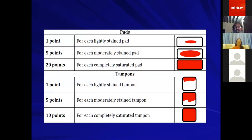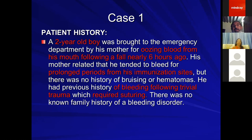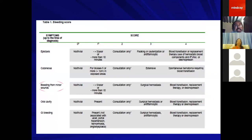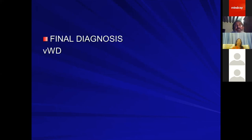For patients with menorrhagia, there is a pictorial bleeding assessment chart where patients can score based on the number of pads used. For example, a two-year-old boy brought to the emergency department for oozing blood from his mouth after a fall, with prolonged bleeding from his immunization site and bleeding following trivial trauma requiring suturing — a bleeding score of three — is considered a bleeder in a child. Final diagnosis: mild von Willebrand's disease. The bleeding assessment tool provides a very objective assessment of bleeding history.